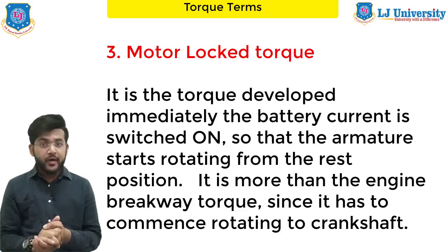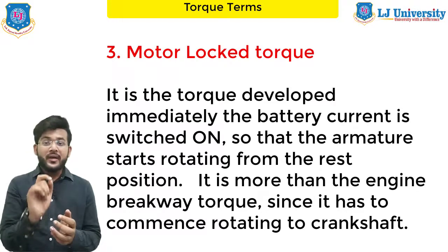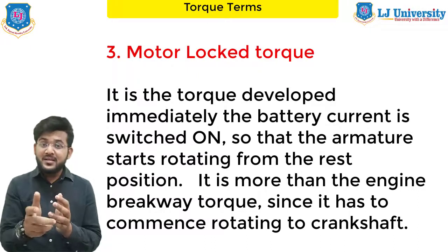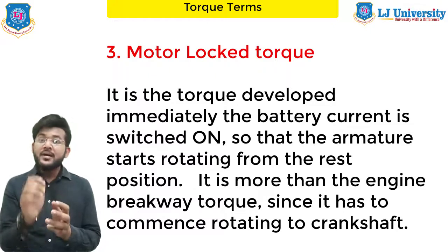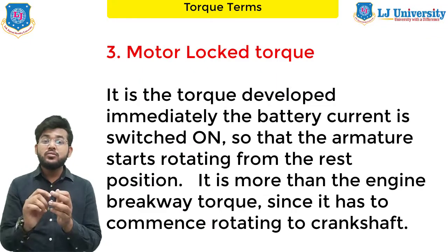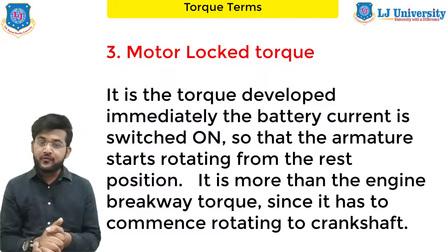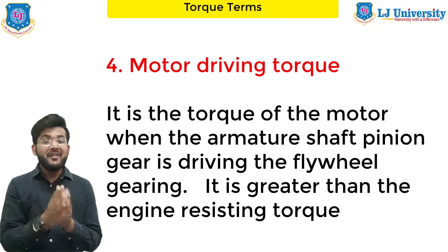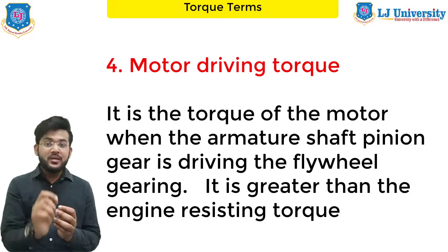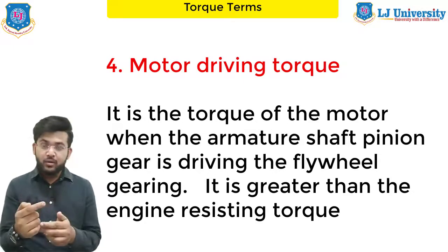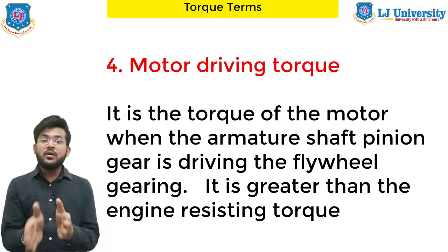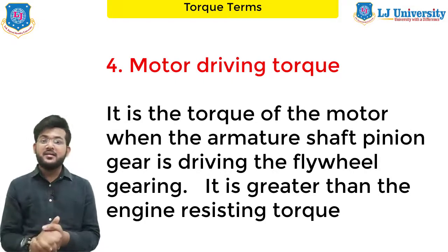Next is motor locked torque — it is the torque developed immediately when the battery current is switched on, so that the armature starts rotating from the rest position. It is more than the engine breakaway torque because it has to commence rotation of the crankshaft. And last is motor driving torque — it is the torque of the motor when the armature shaft pinion gear is driving the flywheel gearing, and it is greater than the engine resisting torque. These are all the torques required for understanding the starting system.